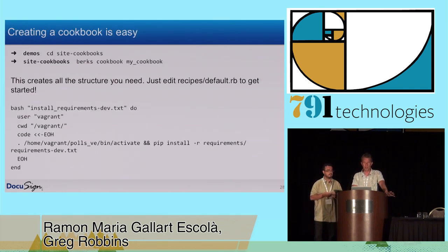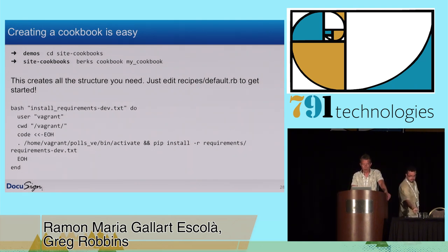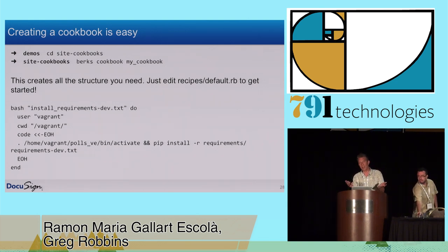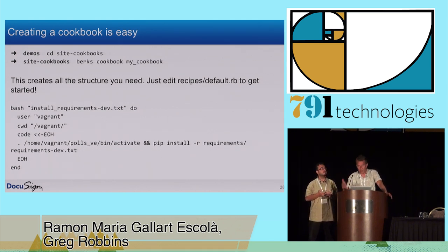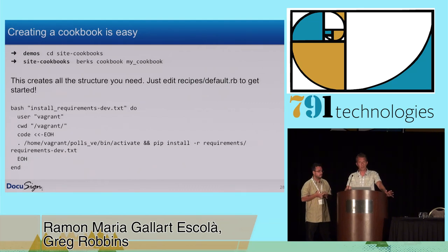Creating your own cookbook is really easy too. The tools that Chef and Chef Solo give you are really pretty good. There's a directory called site-cookbooks where you keep your own custom-made or extended cookbooks. Just by typing the command 'berks cookbook my-cookbook', it set up the entire cookbook structure. All you have to do at that point is add a little bit of code to the recipe's default file, default.rb, and that's the one that's going to be run when the cookbook is called.